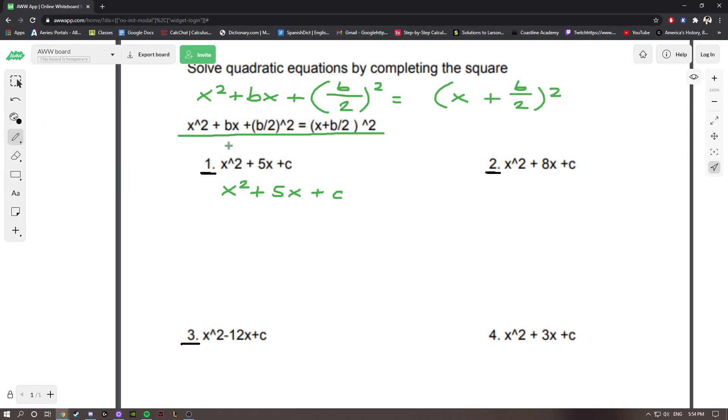So, the directions say, solve quadratic equations by completing the square. Now, what completing the square essentially means is, we have to find c, and then we have to simplify our equation. So, if we follow this, and in this situation, our b value is 5.